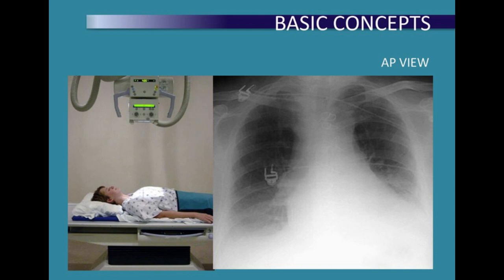In the AP view, the patient stands with their back facing the x-ray machine, and the x-ray beam is directed from the front — anterior — through the chest to the back — posterior. The patient's arms may be raised or placed on their hips. While the AP view is sometimes used for specific situations, it is generally less preferred compared to the PA view.